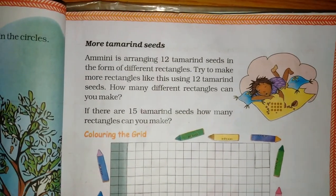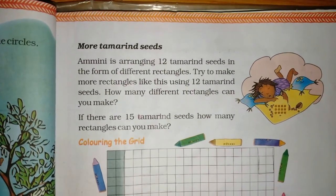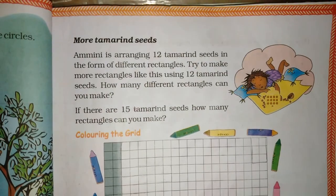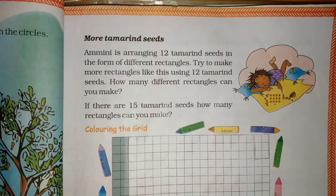Let's see, the tamarind exercise is going to continue. Amini is arranging 12 tamarind seeds in the form of different rectangles. Try to make more rectangles like this using 12 tamarind seeds. How many different rectangles can you make?